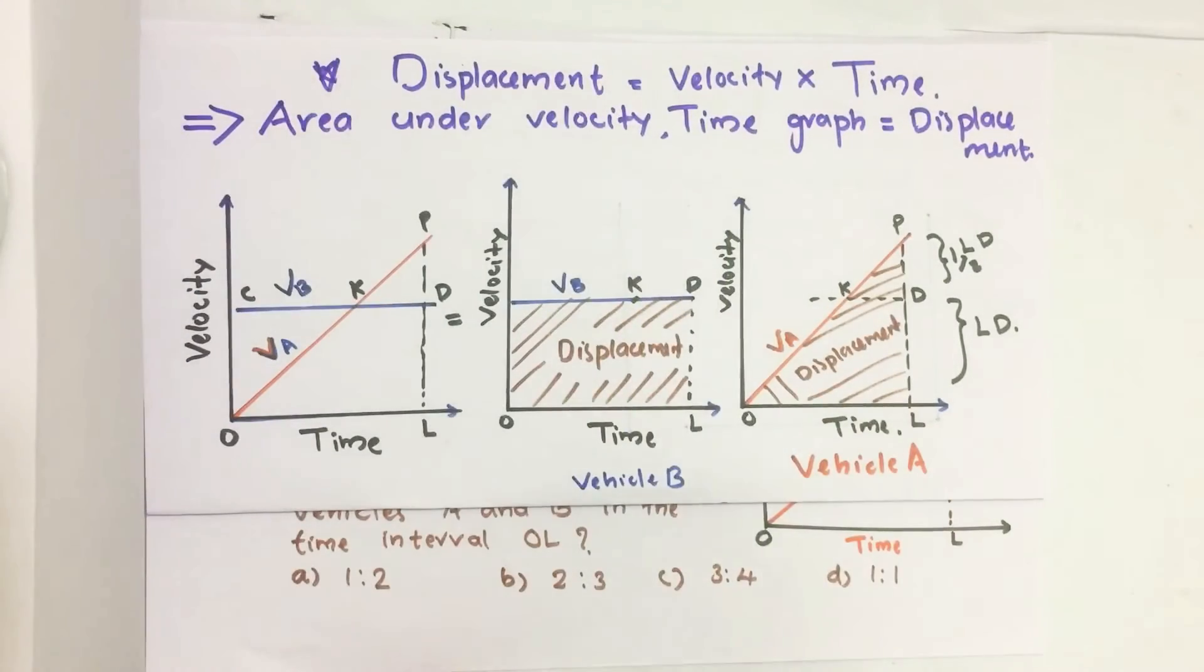Displacement equals velocity into time. We know that. What it implies? Area under velocity time graph equals displacement.